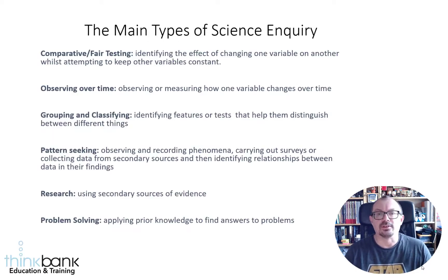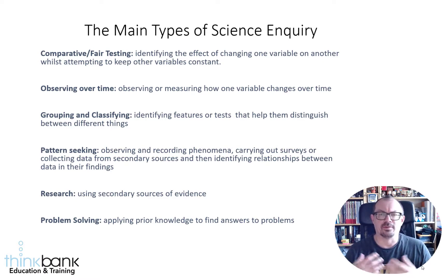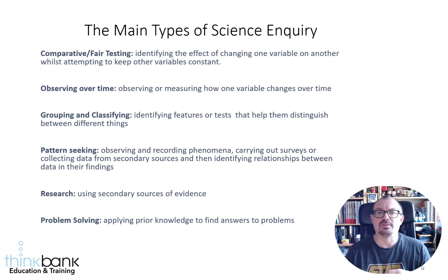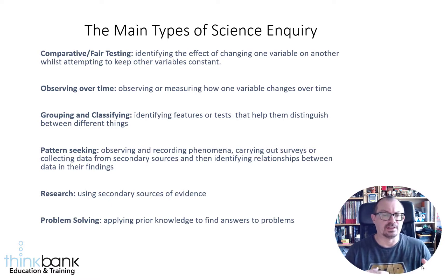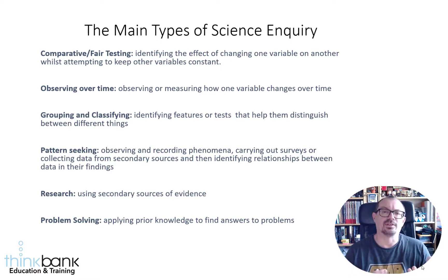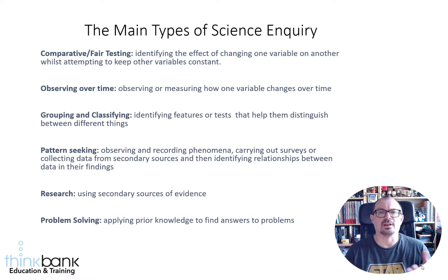There are four or five other ways of doing science in the classroom. There are times for a fair test, but there are other types as well, and it's good to be aware so as a teacher you can use your judgment as to what is best for a particular investigation. The six main types are: fair testing, observing over time, grouping and classifying, pattern seeking, research, and problem-solving — which is a more open-ended way of doing inquiry where you give children a particular problem, such as stopping an egg from breaking when dropped from a height.